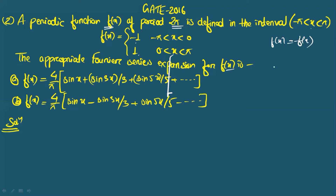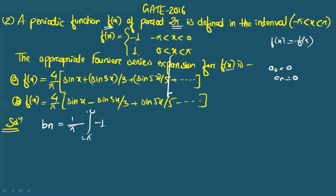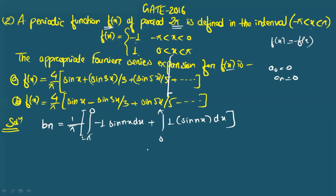Since fx is an odd function, we write a₀ = 0 and aₙ = 0. We only need to calculate bₙ. bₙ equals (2/(b−a)) × integral, which simplifies to (1/π). We integrate from −π to 0 with the value −1 times sin(nx) dx, plus from 0 to π with value +1 times sin(nx) dx.